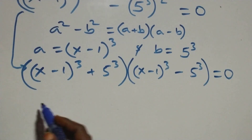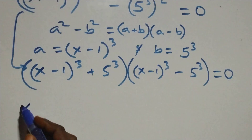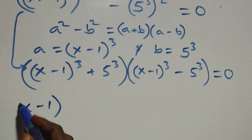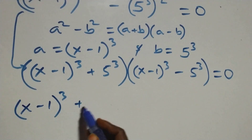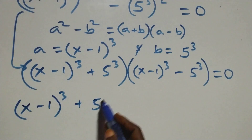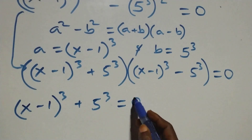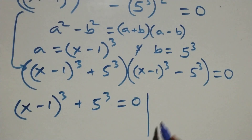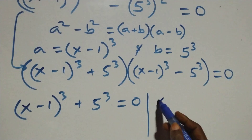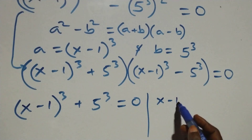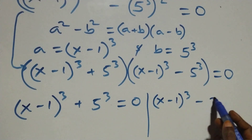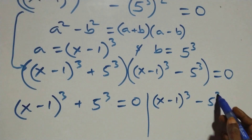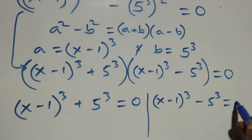We have two possible cases. The first one: (x−1)³ + 5³ equals to 0. Or we have (x−1)³ − 5³ equals to 0.